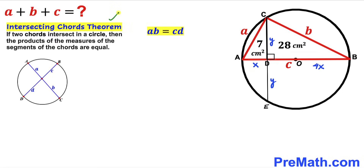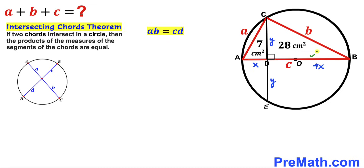Now let's recall the intersecting chords theorem: if two chords intersect in a circle, the product of the measures of the segments of one chord equals the product of the segments of the other. Here, chords AB and CE intersect at point D, giving us segments x, 4x, y, and y. So according to the theorem: y times y equals x times 4x.